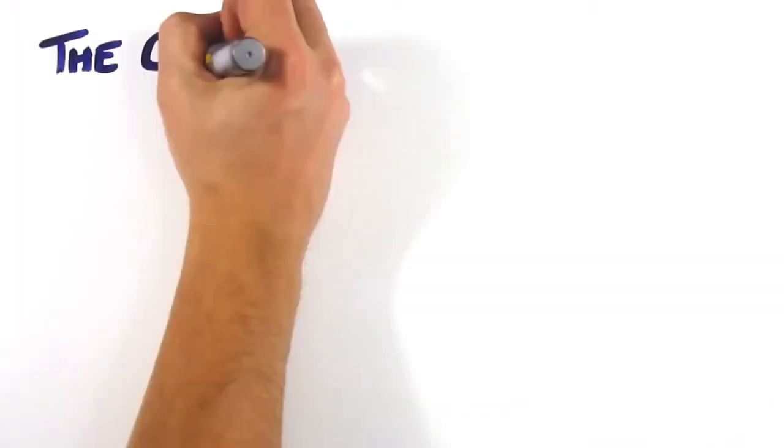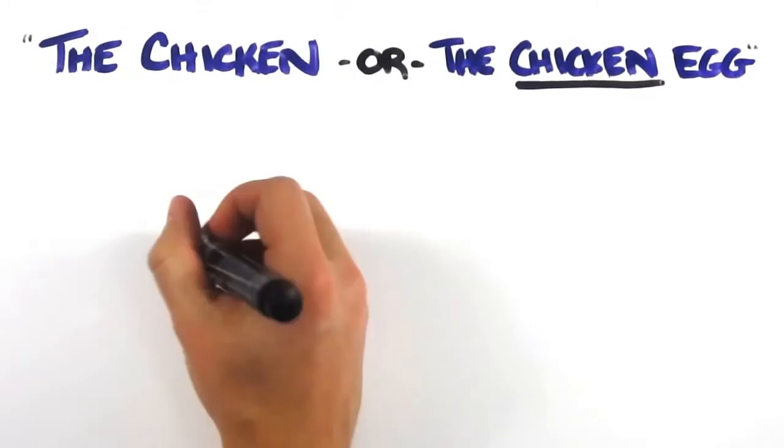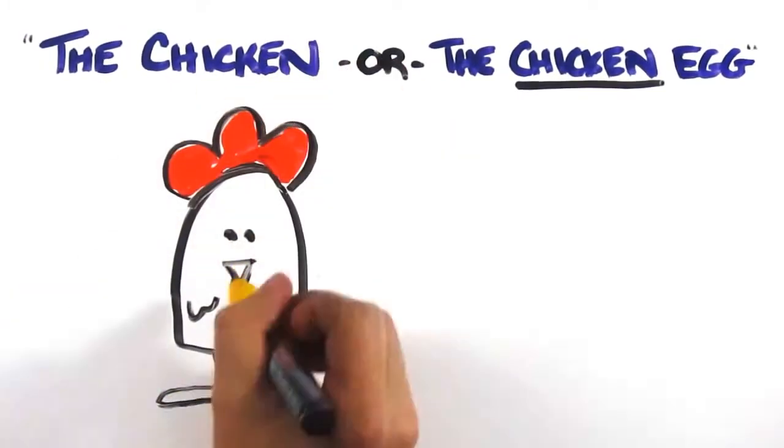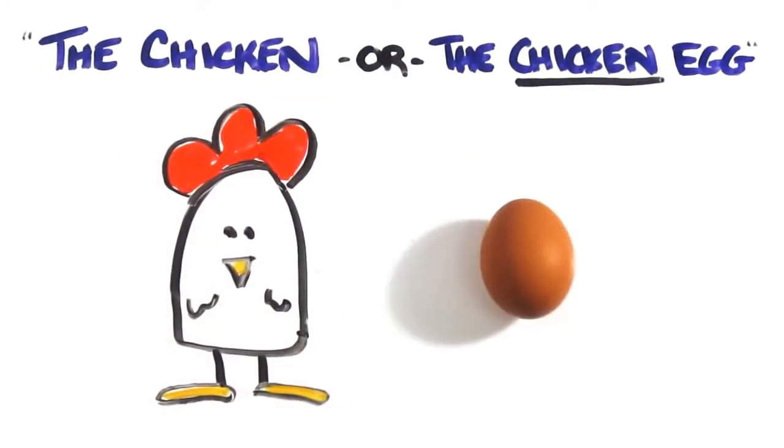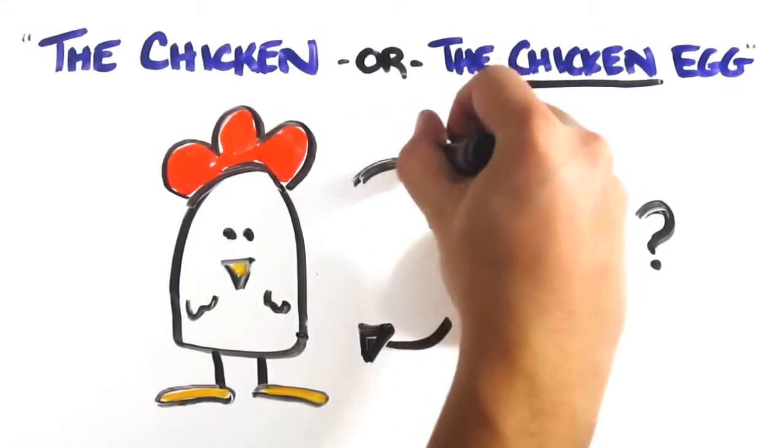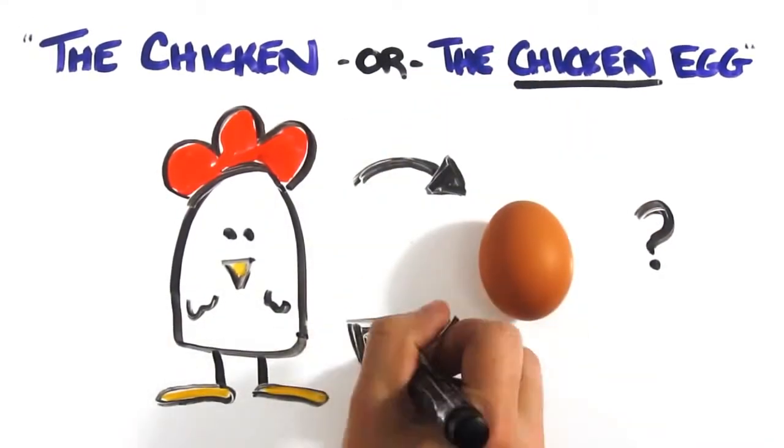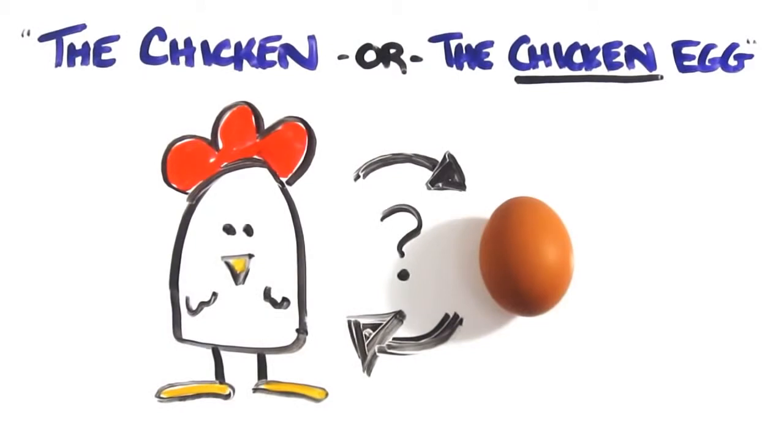But this question, better worded as the chicken or the chicken egg, focuses more on the cyclical cause and consequence. That is, if a chicken is born from an egg, where did the egg come from? Another chicken, presumably, which too must have come from an egg. So which came first?